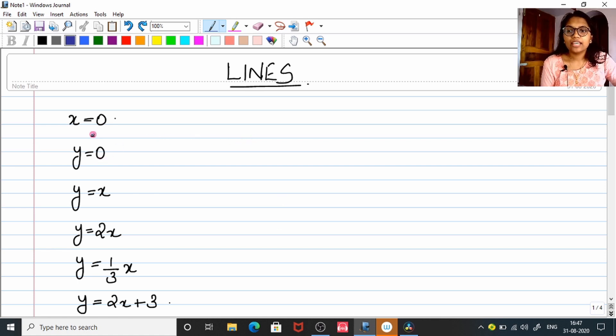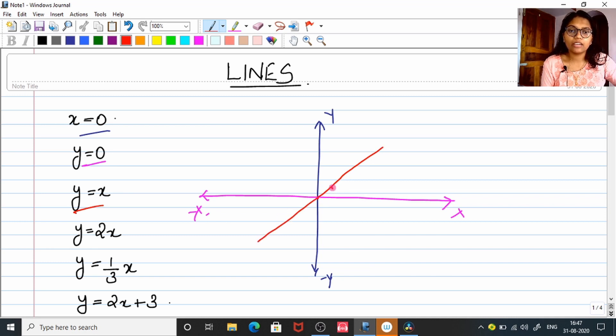Starting with lines: x = 0 is simply your y-axis, y = 0 is your x-axis, and y = x is an inclined line passing through the origin making a 45 degree inclination with respect to positive x-axis.